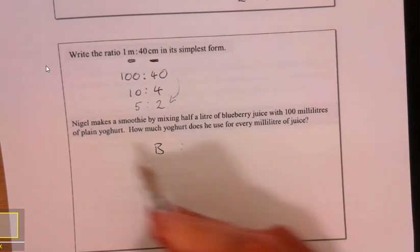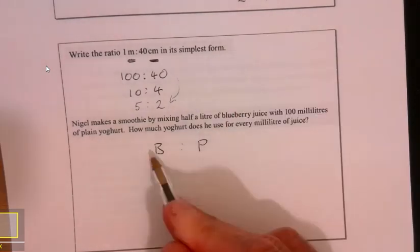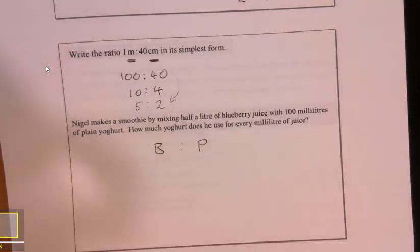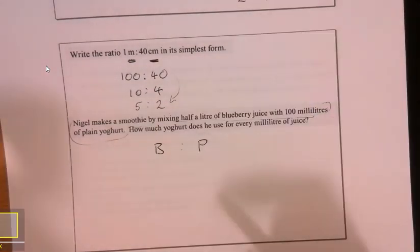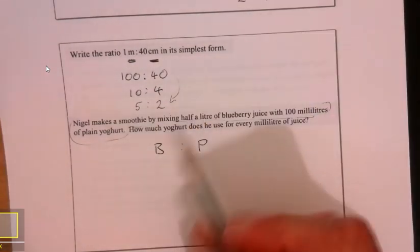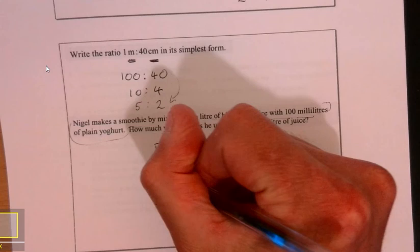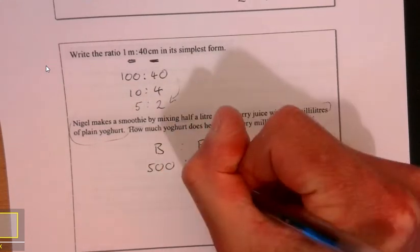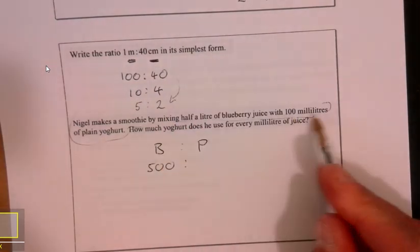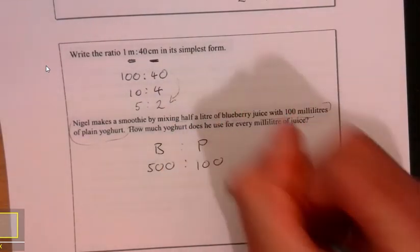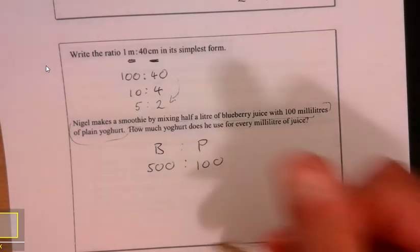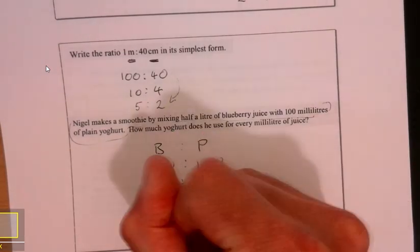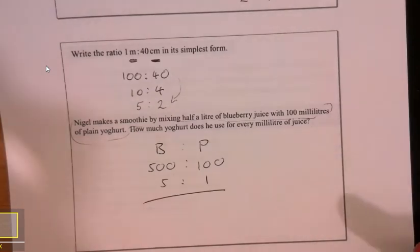I'm just trying to take this stuff here and summarize what's there. Half a liter, well that's 500 milliliters, isn't it? So that would make sense to write that, and then 100. Let's cancel that down. Divide by 100 goes into everything. There we go.